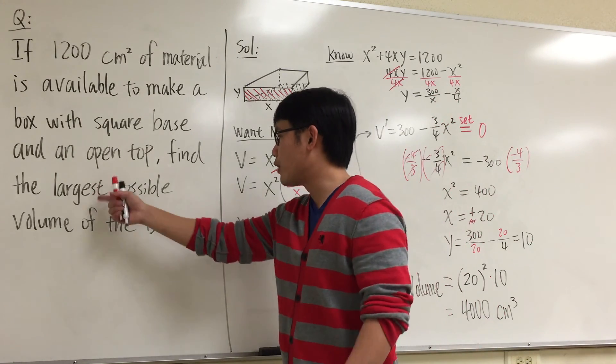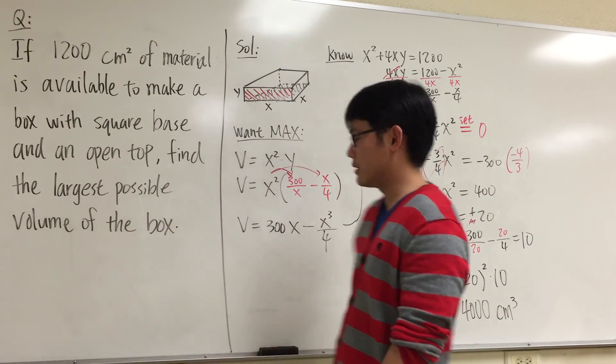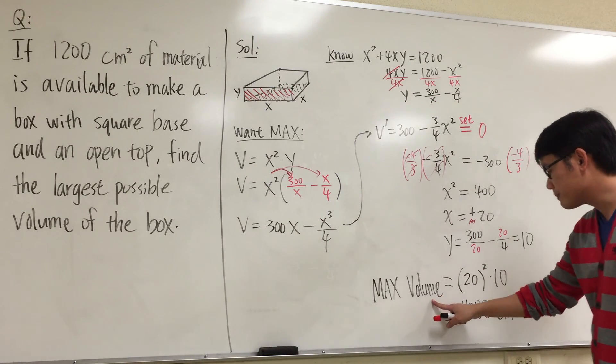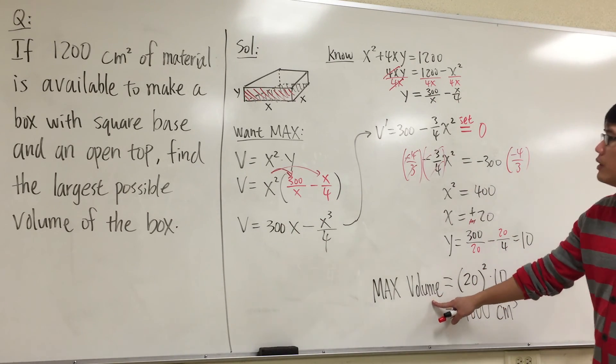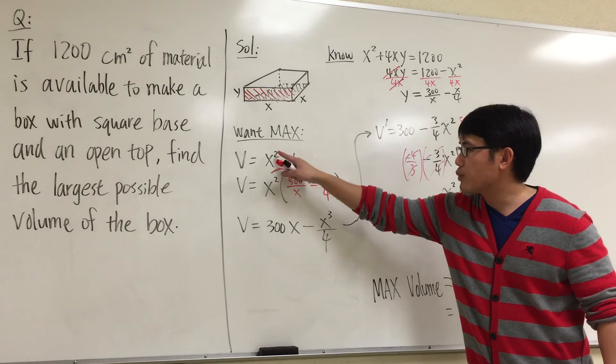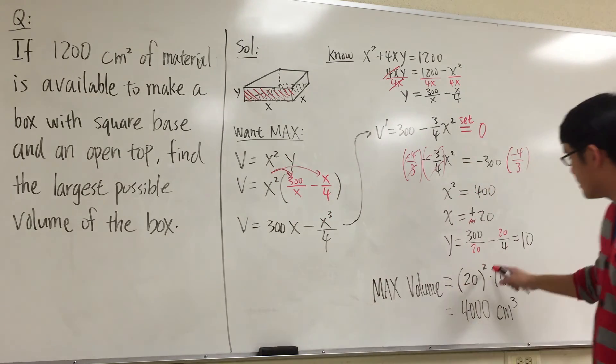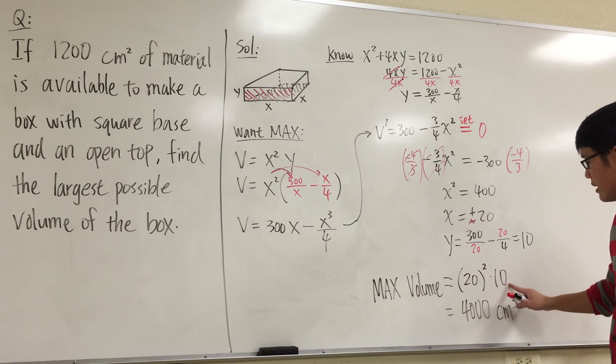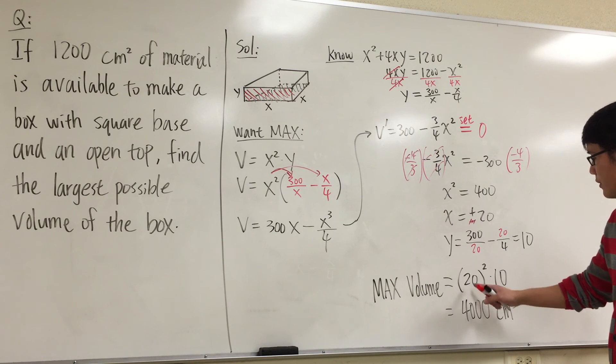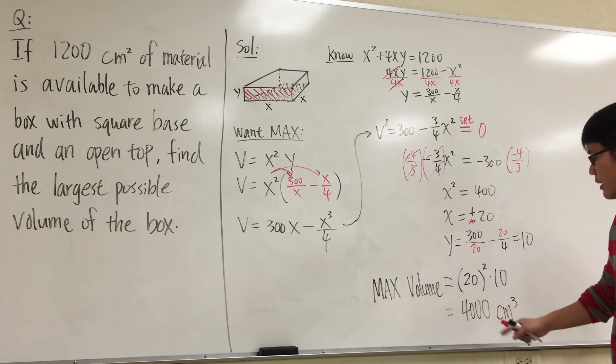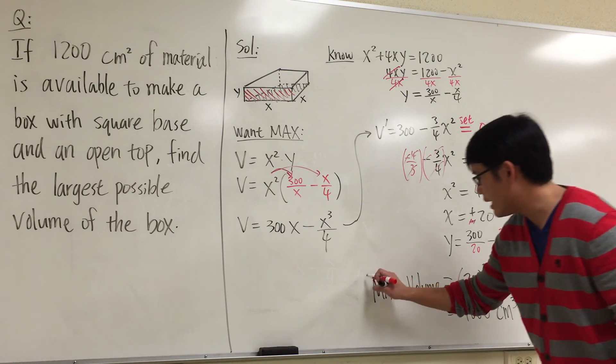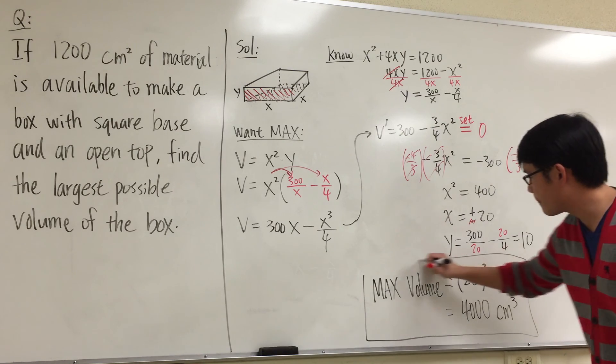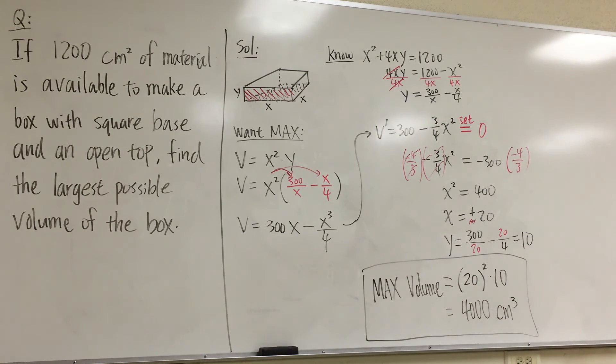And therefore, to answer the question, the largest possible volume of the box, the maximum volume, use this equation: x²y. We know x = 20. So plug in 20 and you square that times y. In other words, this is going to be 400 times 10, which is 4000. And you include a unit centimeter cubed. And this right here is the answer. That's it.